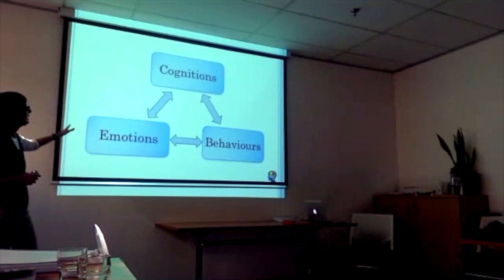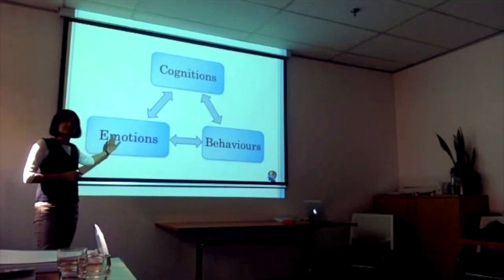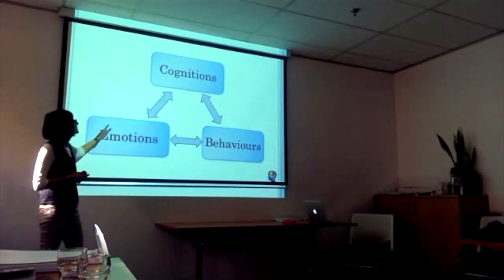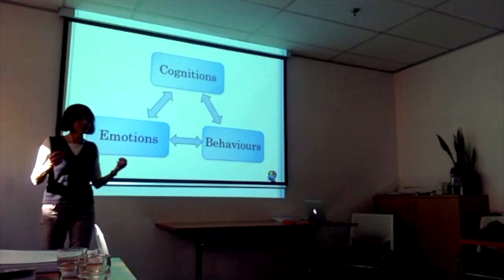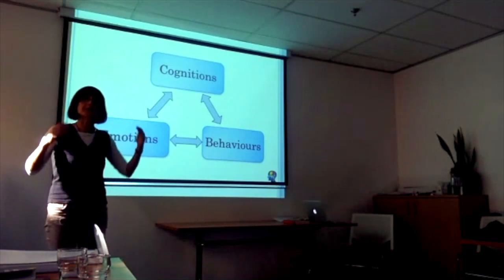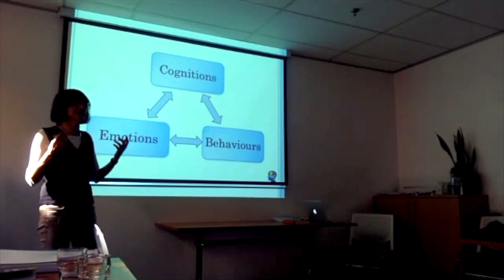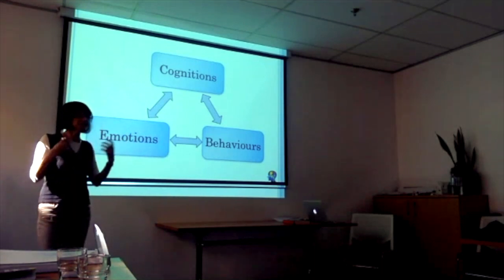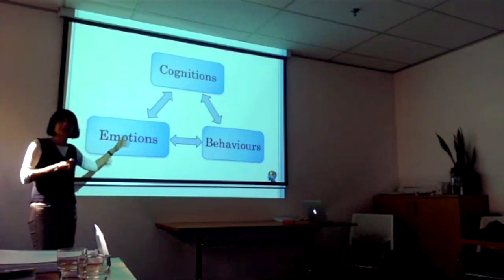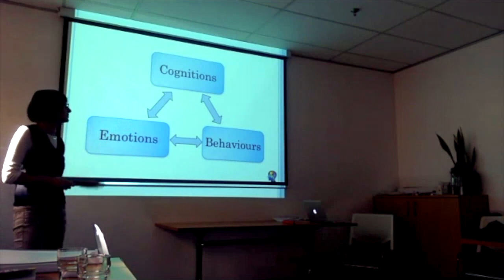The interesting thing about this relationship is that it's not one way — they all interact with each other. When we experience a particular emotion such as anxiety, anger or sadness, it actually affects the content of our cognitions. When you are anxious, you're much more likely to perceive threat and see things catastrophically. When you are sad, you're much more likely to see things pessimistically and as hopeless. So emotions affect cognitions, emotions affect behaviours, and behaviours also affect emotions. I'm going to talk about some behavioural interventions that can have a direct effect on emotions.